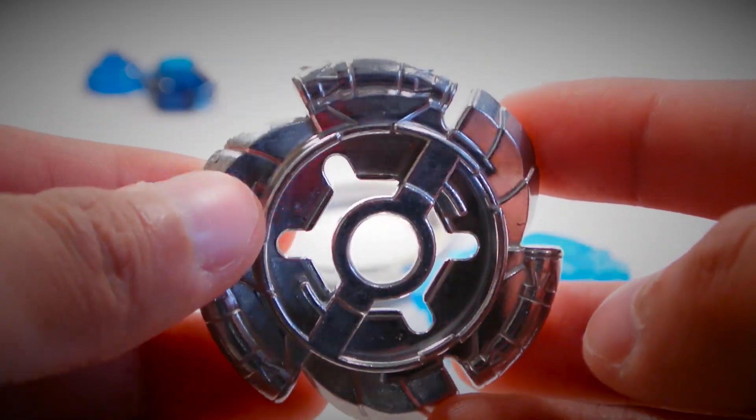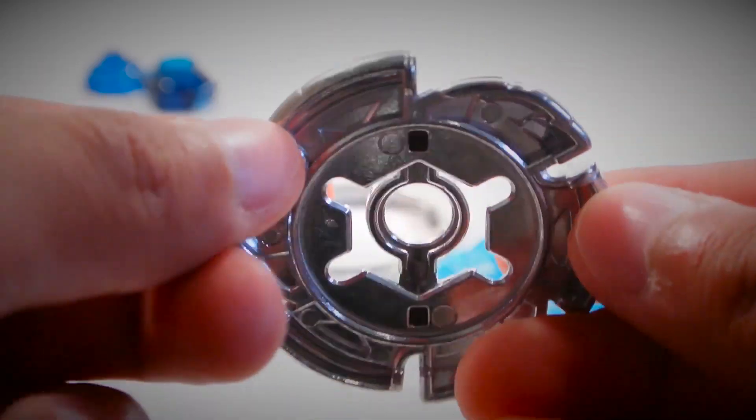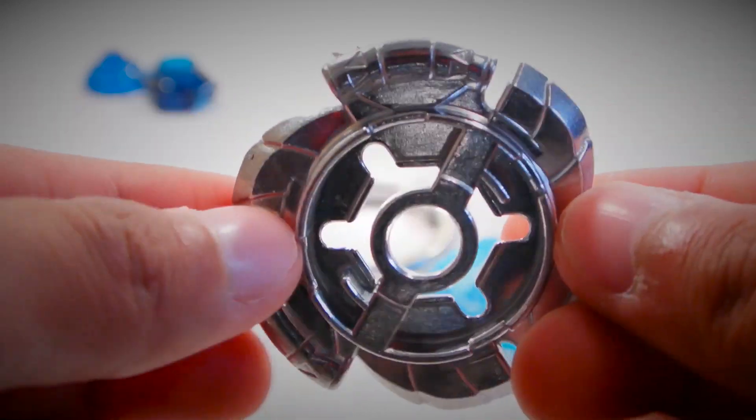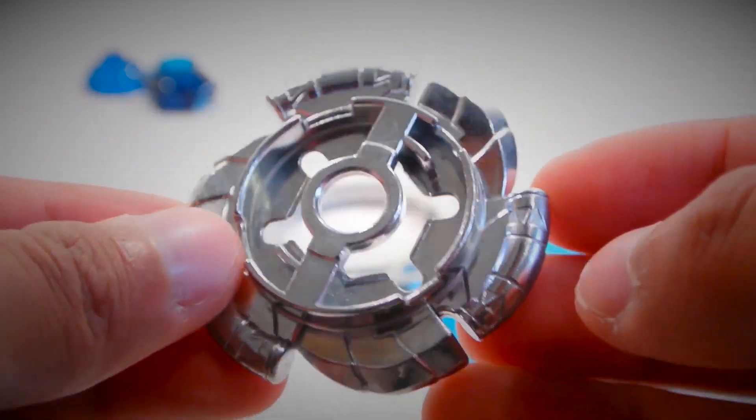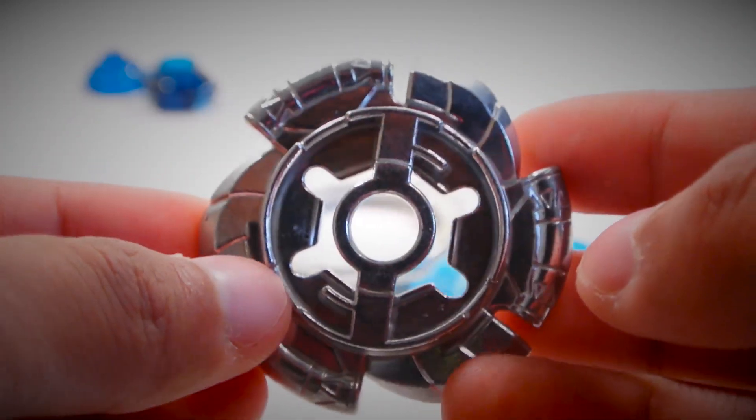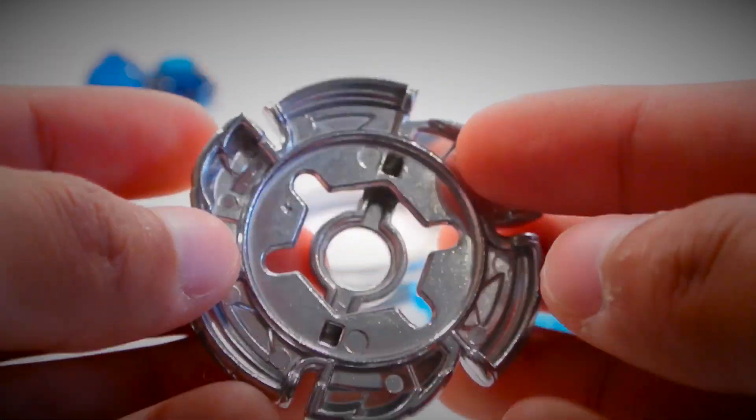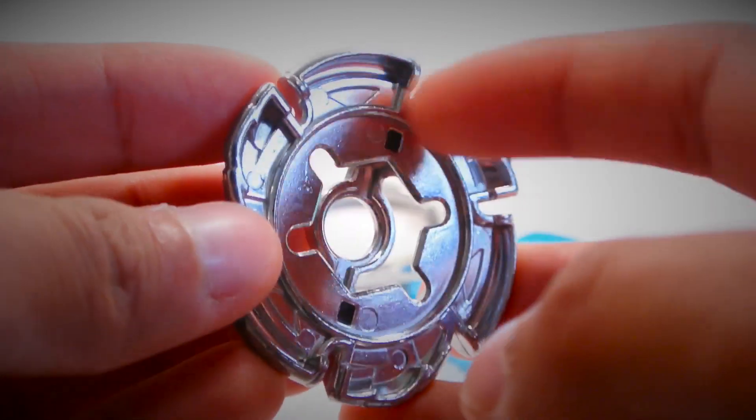The Takara Tomy edition of Omega Dragonis is painted, but Hasbro released it unpainted. I think that was a good idea because the paint does get pretty nasty after several battles. It's a little bit hollowed out too but still pretty good.